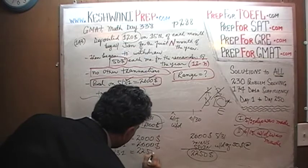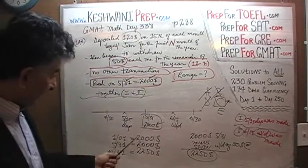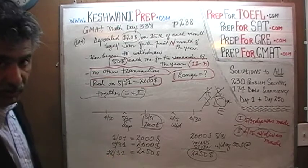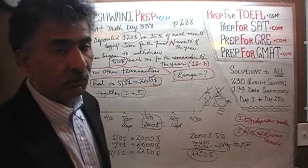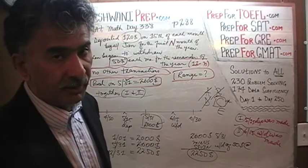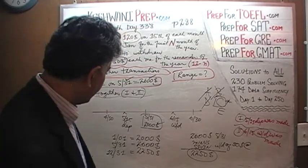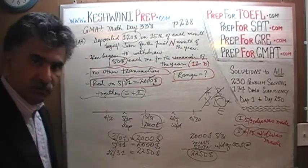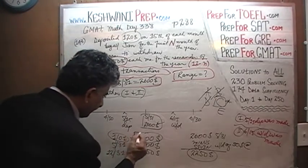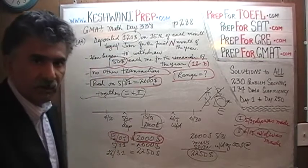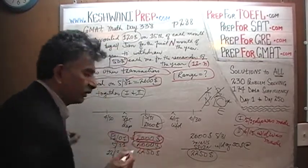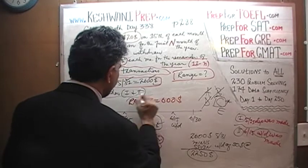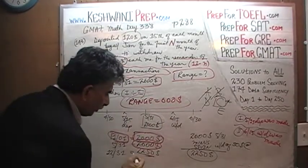So we have three markers: January 1st ($2,000), May 31st ($2,600), and December 31st ($2,250). The range simply means what was the highest balance and the lowest balance in the account. The lowest balance was $2,000 on January 1st — that is what we started with. After that we began to make deposits and it went up all the way to $2,600. Therefore the range is $600. After that we began to make withdrawals and it goes down again.